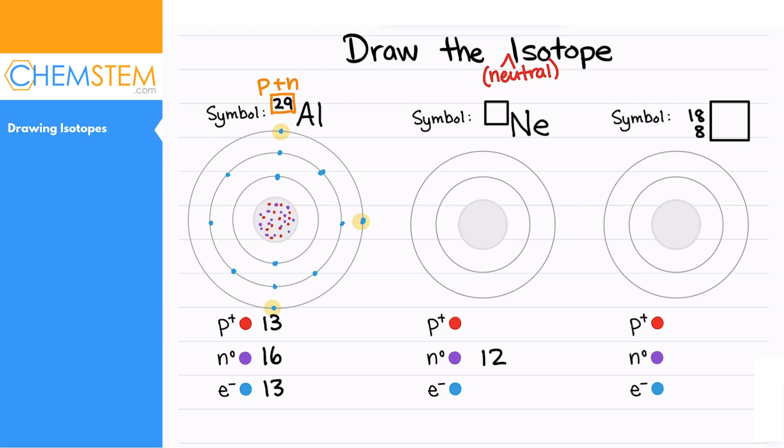So we have the second one, this is neon. We are not given the mass number, but notice how we are given the number of neutrons. If we go to the periodic table we see that because it is neon, it's got to be the atomic number 10, which means it has 10 protons. So let's draw those in: 1, 2, 3, 4, 5, 6, 7, 8, 9, 10.